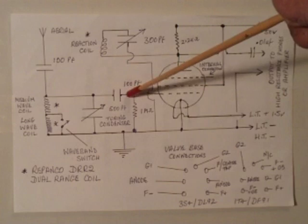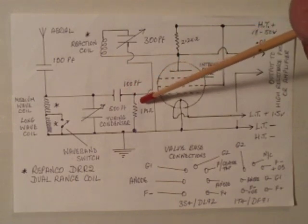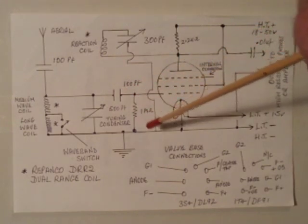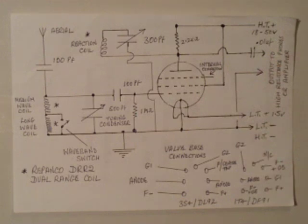A 100 puff grid capacitor and from the grid to earth, a 1 meg resistor. Not a critical value, 1 meg, 1.5 meg, that's perfectly okay.